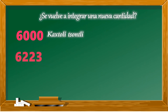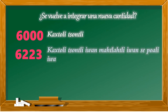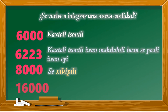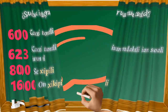Cuando llegamos al zontli, que son los múltiplos del 400, vamos conformando cantidades de 1000 como se muestra en los ejemplos. Al llegar al 8000 surge el nombre de una nueva cantidad: el chiquipili. Aquí vamos empleando múltiplos de 8000: para 8000 sería ceshikipili, y para 16000 sería omeshikipili.